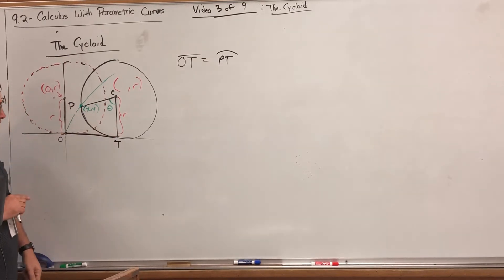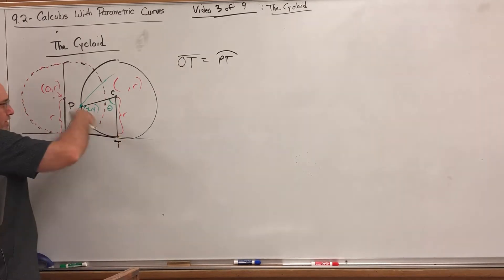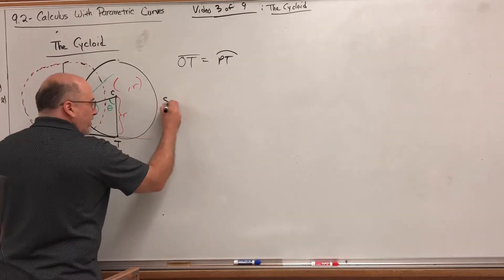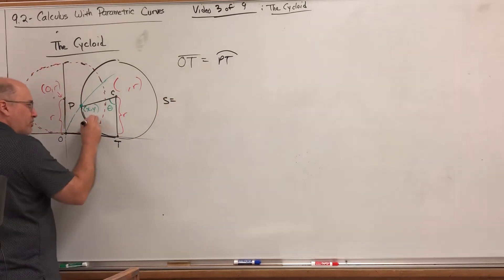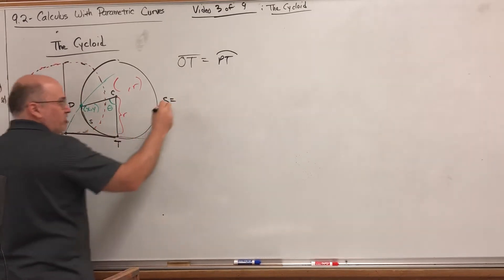The second thing we need to do is figure out how big this arc length is relative to the angle of rotation and the radius. Because if we can, then since these are equal, this would just be the x-coordinate of our center. To answer what's the arc length based on the angle of rotation is pretty easy.